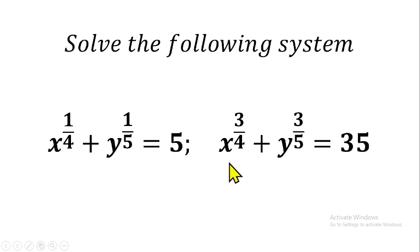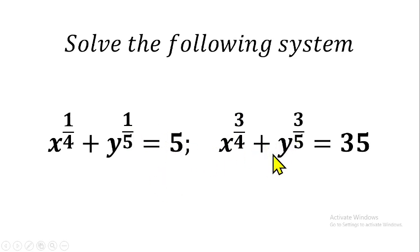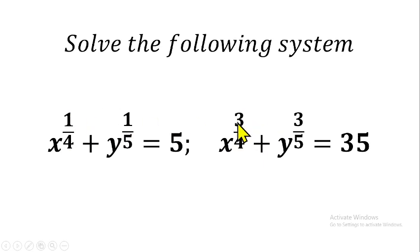You cannot solve this directly the way you solve two linear equations simultaneously, because this is a bit more complex. So how do we solve this kind of question? We can improvise. Notice that the difference between the powers is in the numerator — in equation one you have one over four and three over four, and similarly one over five and three over five. The denominators are the same but the numerators differ, so we can exploit that.